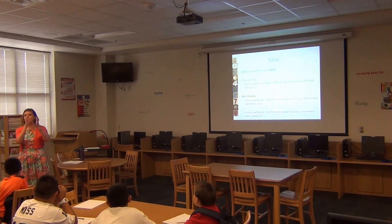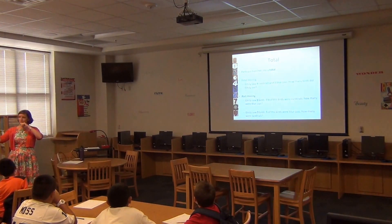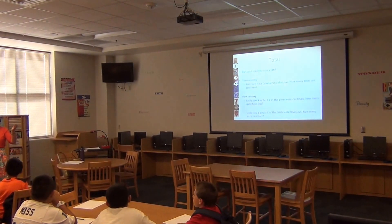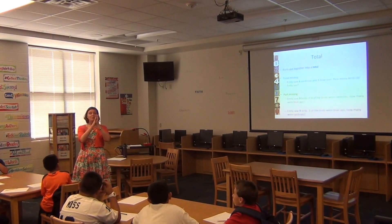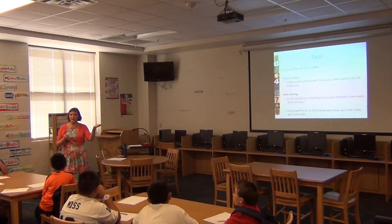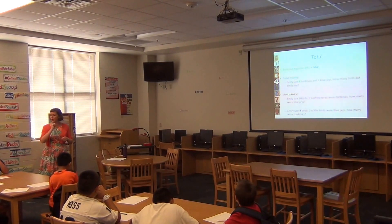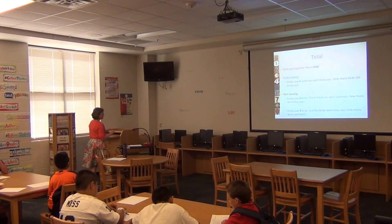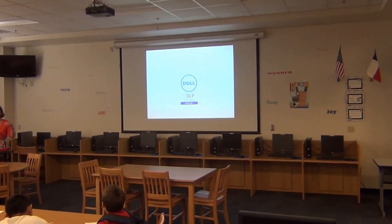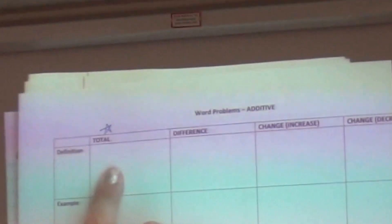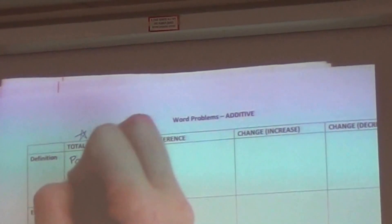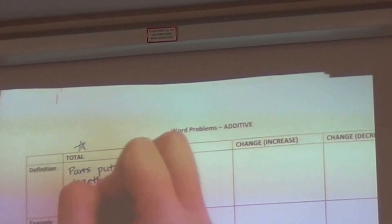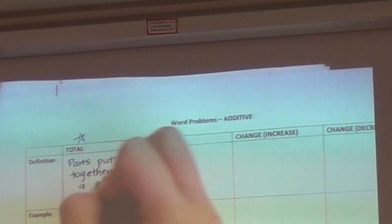The problem at the bottom is the same way: Emily saw nine birds. If five were blue jays, how many were cardinals? We were given a total of nine birds and are finding one of the parts. So go ahead and pick up your pencil and write a definition for a total problem: in a total problem, I have parts put together for a total.